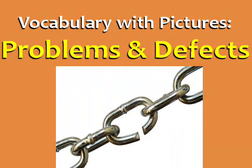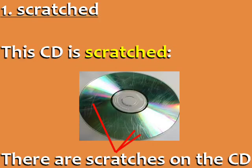English Vocabulary with Pictures: Problems and Defects. Number 1: Scratched. This CD is scratched. Another way to say it is there are scratches on the CD. Scratches are marks on the surface.